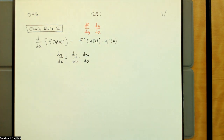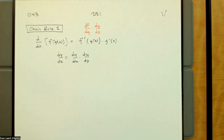In Leibniz notation, it looks like we're kind of canceling out the dg or canceling out the du — which we kind of are.